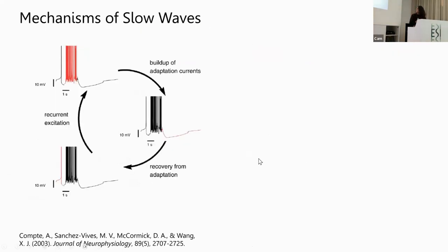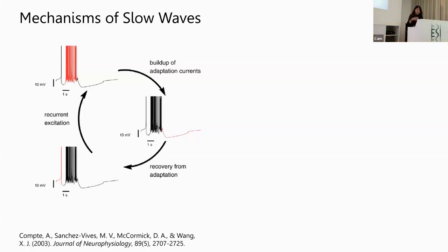How is this generated? We proposed — this is a model by Compte et al. — a relatively simple idea: there is recurrency in the circuit, and this recurrency generates excitation, an up state shown in red. Then, because of activity-dependent adaptation, this is progressively recruited and eventually terminates the up state. Here you can see the adaptation — a buildup of adaptation currents, mostly potassium currents. These potassium currents decay over time, and when they decay, the recurrency wins again and brings the network up, creating this cycle of up states and down states.